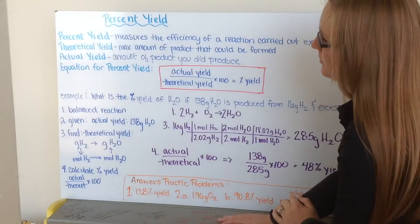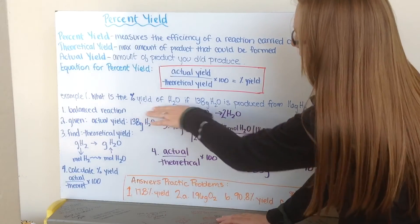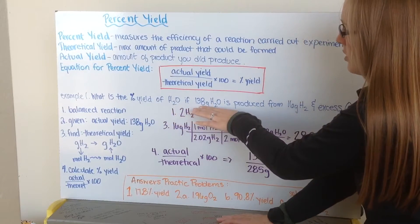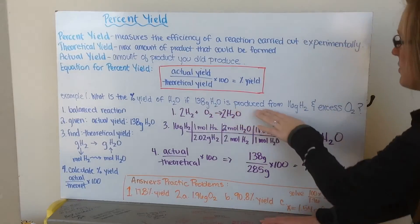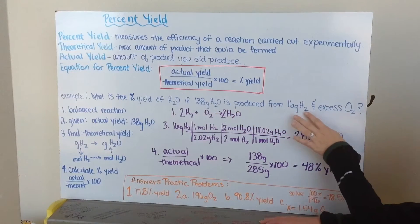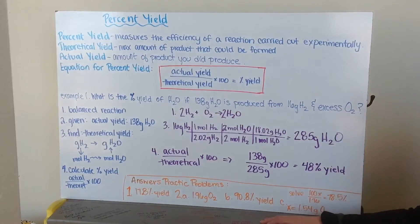Let's work through an example. I want to know the percent yield of water, if 138 grams of water was produced from 16 grams of hydrogen, along with an excess of oxygen.